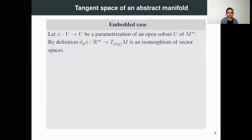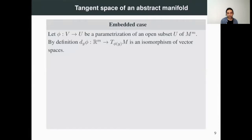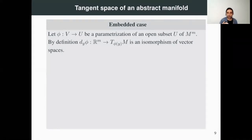We just gave an idea of why the definition of a tangent space of an abstract manifold at a point has to be possible, but we want more. We don't want just to define the tangent space at a point. We want to see, for instance, that this tangent space is a vector space. So we are going to try to get there.